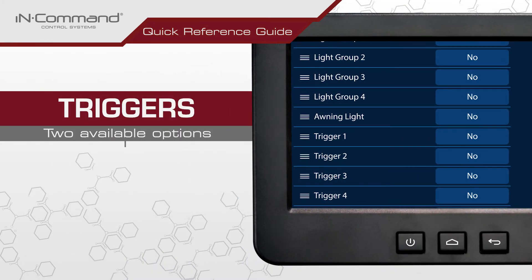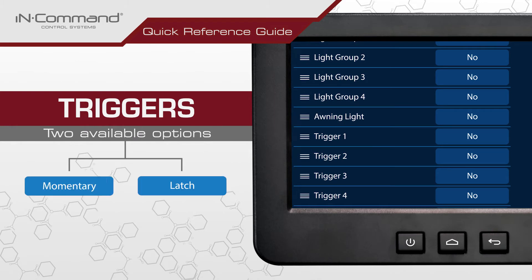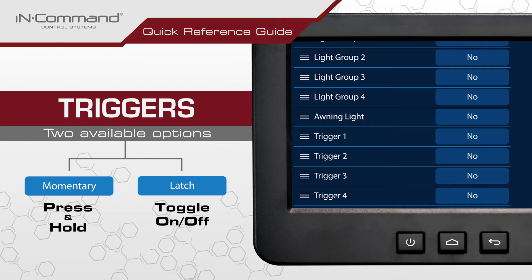Triggers come in two forms: momentary and latch. A momentary trigger will activate only while being pressed, whereas a latch trigger will function as an on-off toggle switch. The appropriate trigger type will depend on the component being operated.